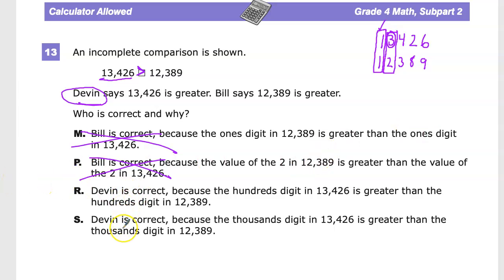So let's take a look, because they love to get you to go, oh, Devin is correct, so I'm just going to circle R, because it's the first one that says Devin is correct, right? But that doesn't mean that's the right answer.